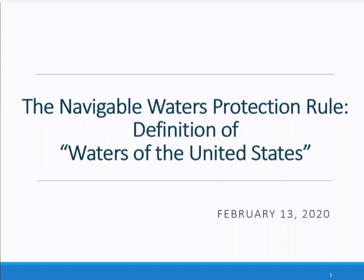The final rule reflects legal precedent set by key Supreme Court cases, as well as robust public outreach and engagement, including significant pre-proposal input and over 620,000 comments received on the proposal. The Navigable Waters Protection Rule protects the environment while respecting states, localities, tribes, and private property owners. It clearly delineates where federal regulations apply and gives states and local authorities more flexibility to determine how best to manage waters within their borders. I'm pleased to note that EPA has worked side-by-side with our partners at the Department of the Army throughout the two-step rulemaking process.